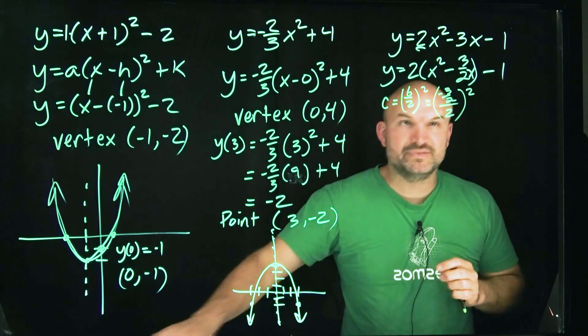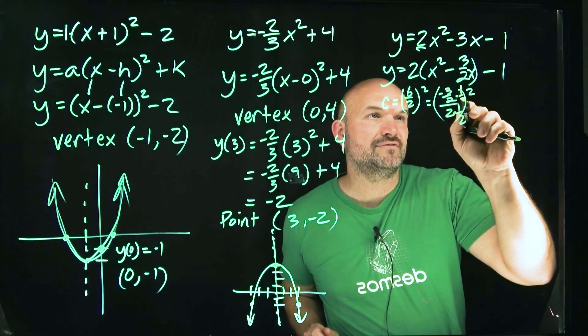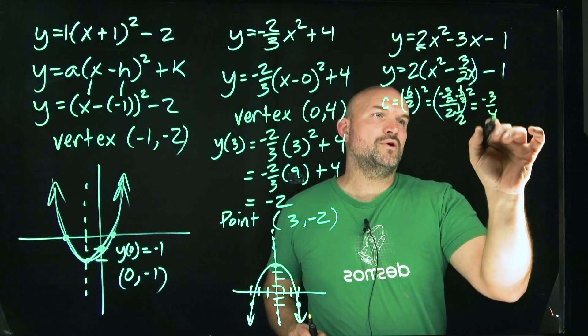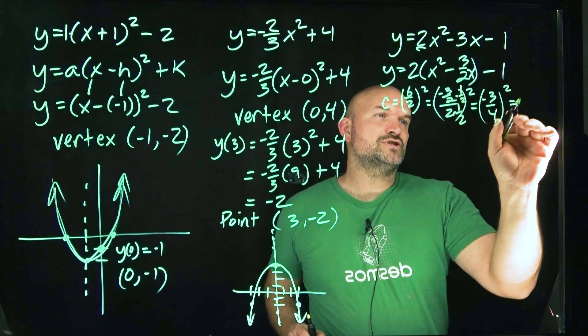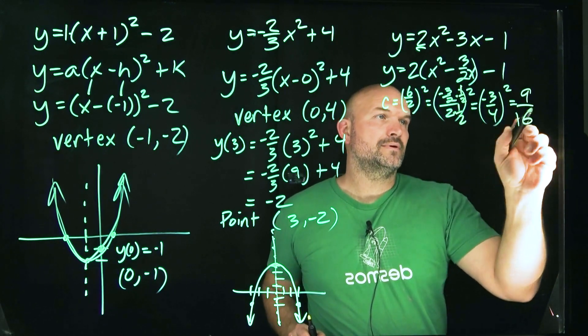Well, be careful because dividing by 2 is the same thing as multiplying by 1 half. So technically what this is, is negative 3 fourths squared, which is going to be 9 sixteenths.